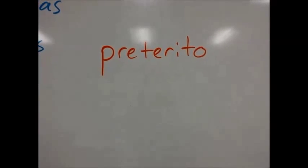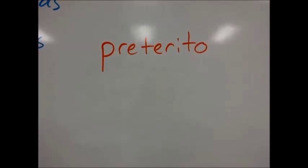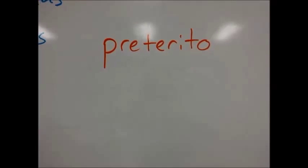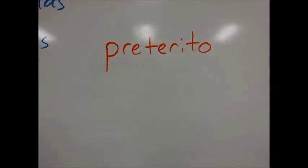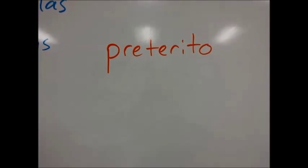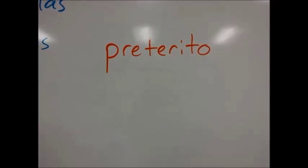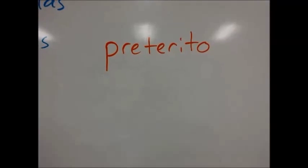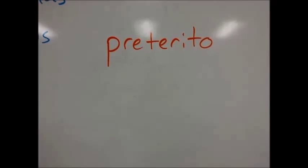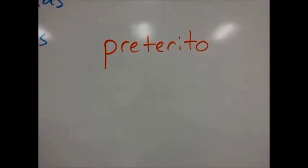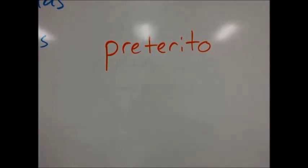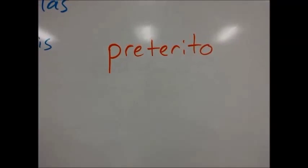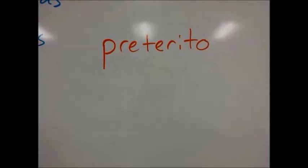Here's another example. The word is pretérito. If you look at this word, it's naturally llana — the emphasis should be on the second to last syllable because it ends in a vowel, giving preterito. But the word is actually pretérito. So I need to indicate that the emphasis is on the third to last syllable by making the word esdrújula and adding an accent.